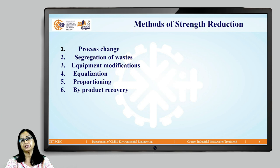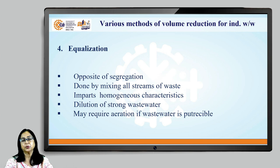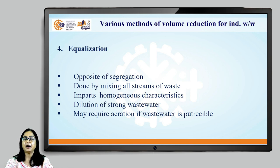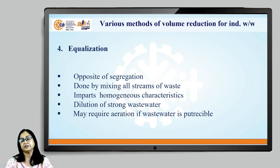Today we will talk about equalization, proportioning, and by-product recovery. Method number four is equalization. It is the opposite of segregation of waste — here we mix all wastewater resulting from various sections. So instead of segregating, we are mixing all the streams of wastewater. This imparts homogeneous characteristics, since in each section the chemicals used and the processes carried out are different, and hence the wastewater from each source has different characteristics.